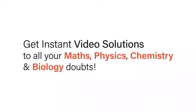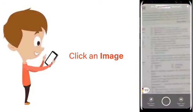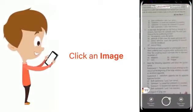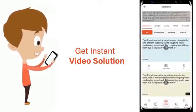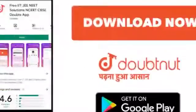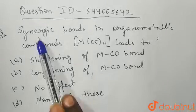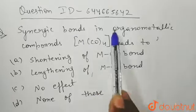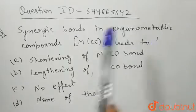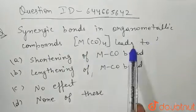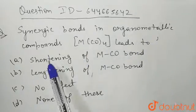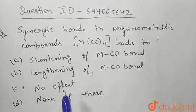With Doubtnut, get instant video solutions to all your maths, physics, chemistry and biology doubts. Just click the image of the question, crop the question, and get instant video solution. Download the Doubtnut app today. Hello students, the question is: synergic bonds in organometallic compounds M(CO)₄ leads to — and these are your options.